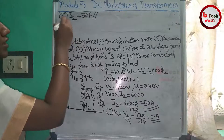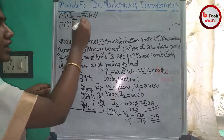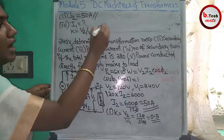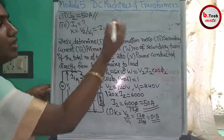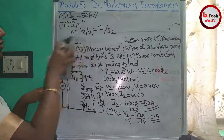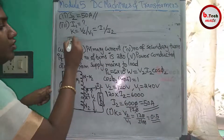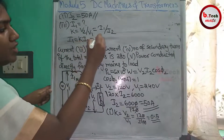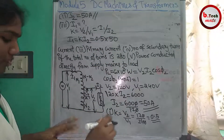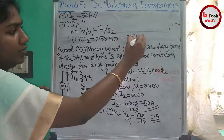Third part: the primary current I1. Using the relation k = V2/V1 = I1/I2, we get I1 = k × I2 = 0.5 × 50 = 25A.